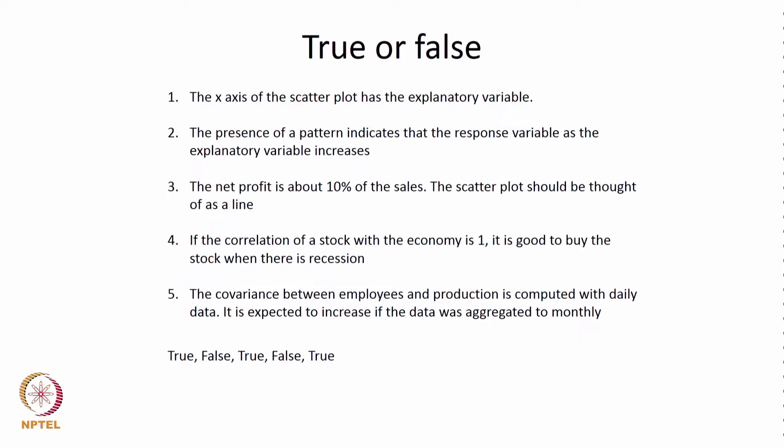Question 3: let us have a situation where the net profit is about 10 percent of the sales. The scatter plot should be thought of as a line. The net profit being about 10 percent of sales gives us an indication that we have a line of the form y = a + 0.1x, roughly the slope can be thought of as 0.1. Therefore, when we plot this data it would approximate to a line, and the answer is true.